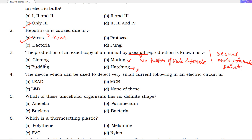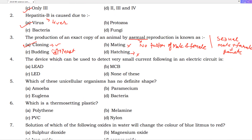Next you have cloning and budding. Cloning produces an exact copy of an organism. In budding, a bud forms on an organism and slowly develops into a new organism — for example, yeast. So the answer is cloning: an exact copy is produced by cloning.